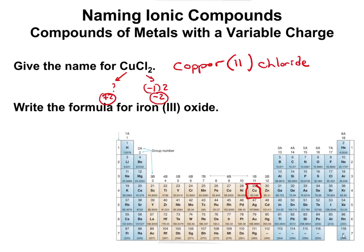You figure out the Roman numeral based on the anion present, because anions don't have a variable charge. We always know the charge of our anions based on where they are on the periodic table. For chlorine, we know it's always going to have a negative one charge because it's one away from the noble gas.